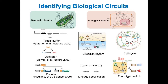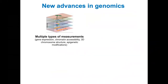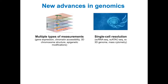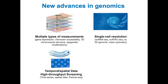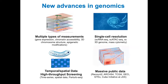However, identifying gene circuits is still a challenging problem. We are encouraged by new advances in genomics. Now we can not only measure multiple types of genomics data at the same time, but also at single-cell resolution with temporal and spatial information. Moreover, these data are made publicly available almost immediately. Thus, we wonder whether we can model gene regulatory circuits by integrating this genomics data.